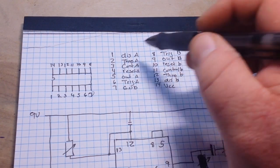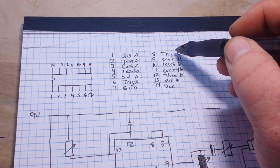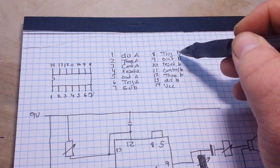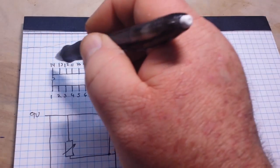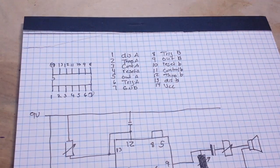Then we come up to the top side, which is our second 555, we have our trigger B, output B, reset B, control B, threshold, discharge, and pin 14 is our VCC.